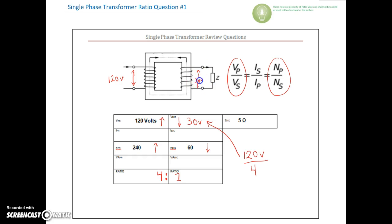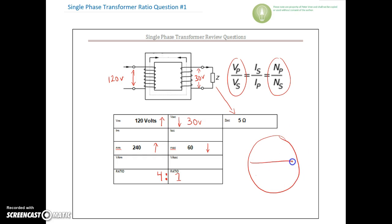We've got 30 volts across the secondary. Now we need to find our current on the secondary. The impedance here is five ohms, so at this point we just use Ohm's law: 30 volts impressed across a load of five ohms. 30 divided by five gives us six amps on the secondary, so we've got six amps flowing on that conductor.